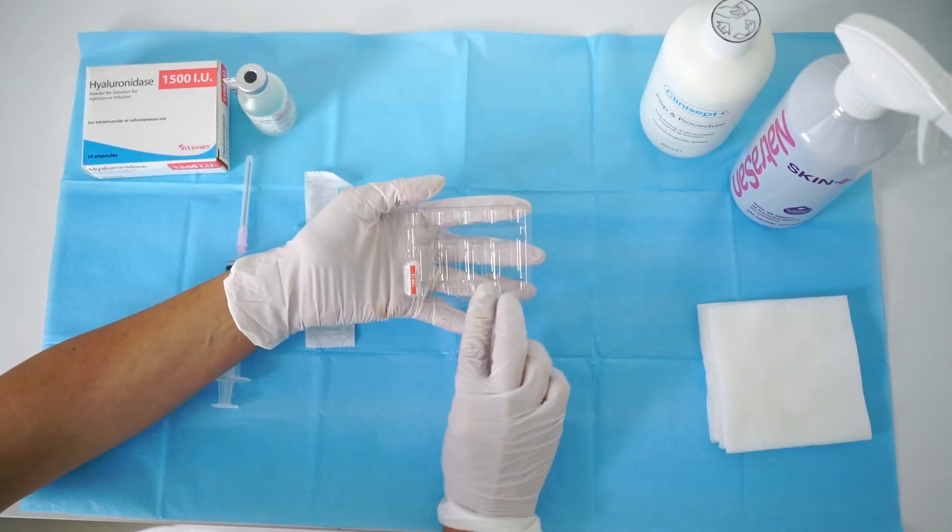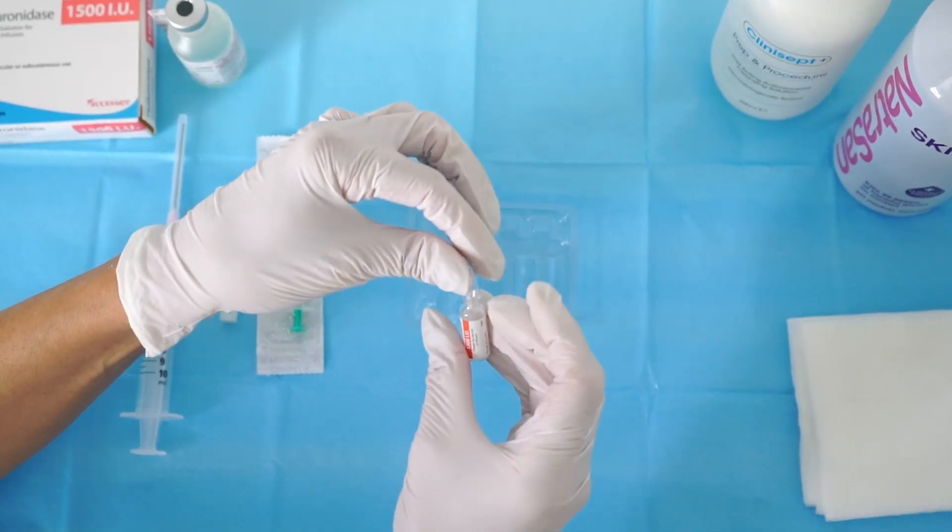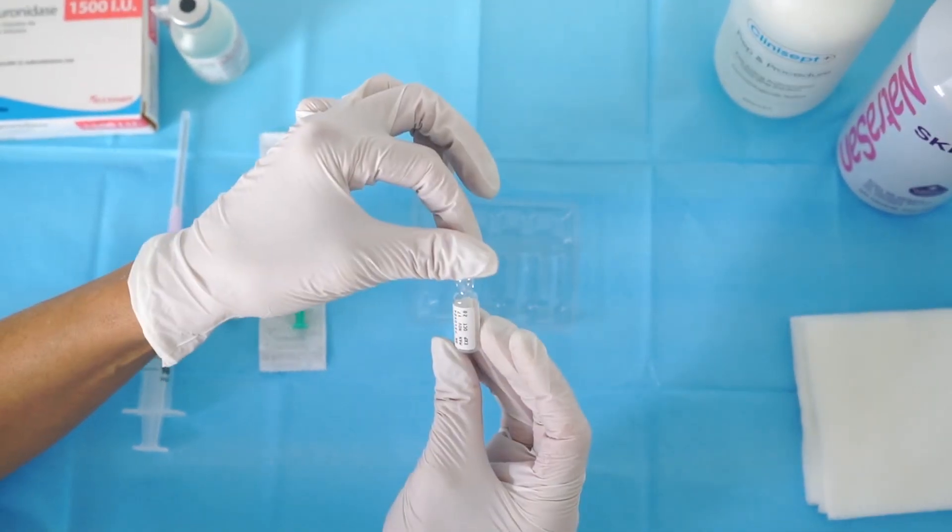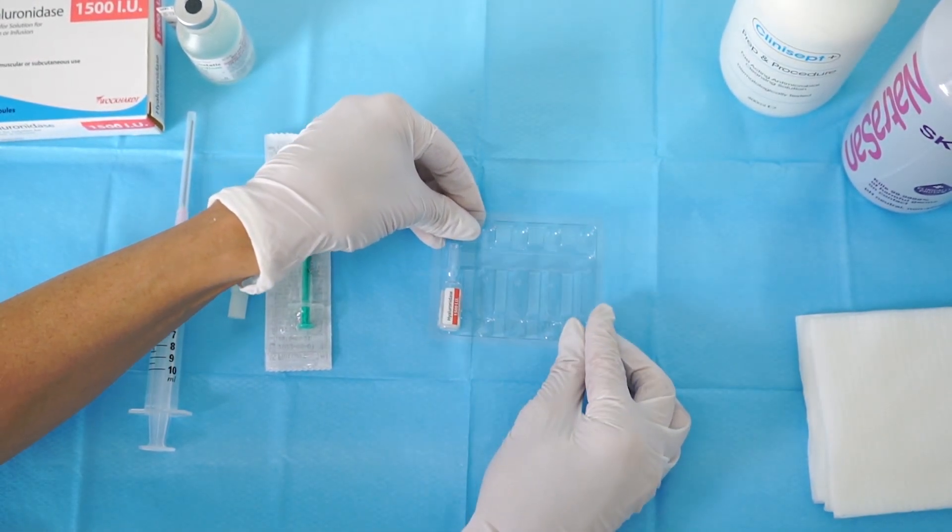The vials come like this, it will be 5 vials usually, 10 vials in a pack. And you can see it's a glass small vial with your expiry date and everything as you would require it to put under medical records.